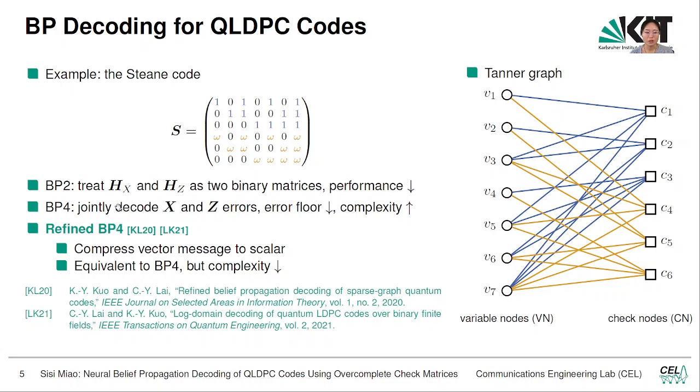The second option we have is to use the quaternary BP decoder, which jointly decodes X and Z errors and will have a better performance but also a higher complexity because of the message passing, which is a vector-vector message. Fortunately, we have this recently proposed refined BP4 decoder by Kuo and Lai. In this refined BP4, we could compress the vector message to scalar, and also the output of the decoding will be exactly the same as BP4 decoder. But the complexity is only comparable to BP2 decoder, which is beneficial if we want to introduce neural belief propagation decoding.